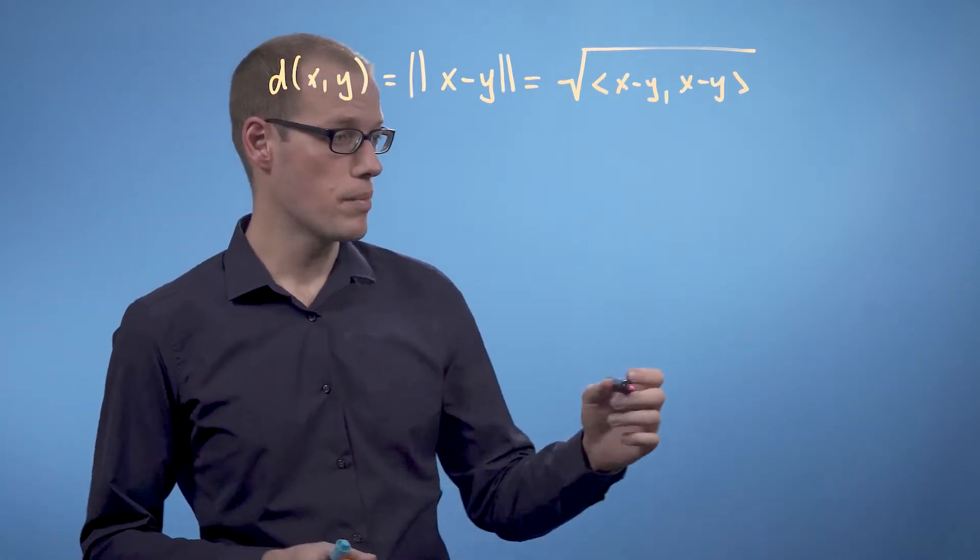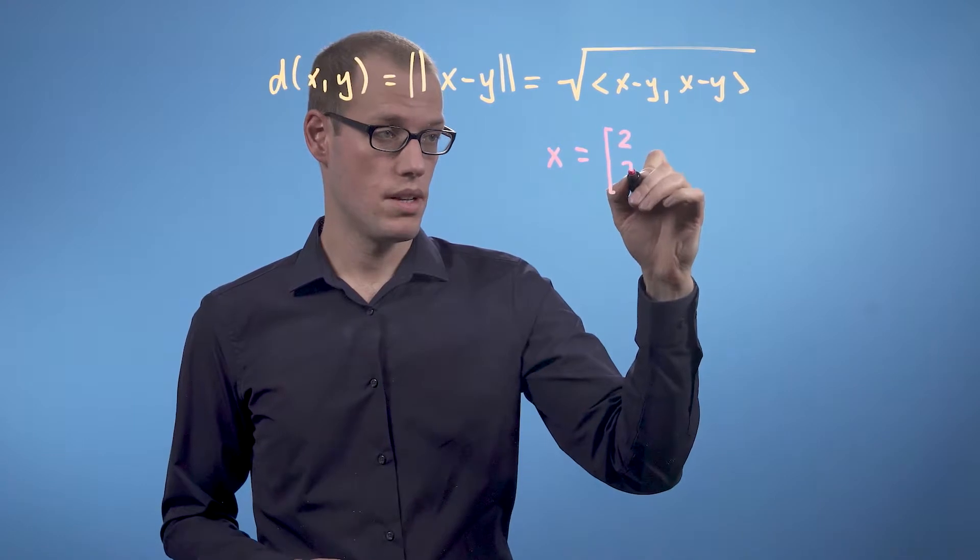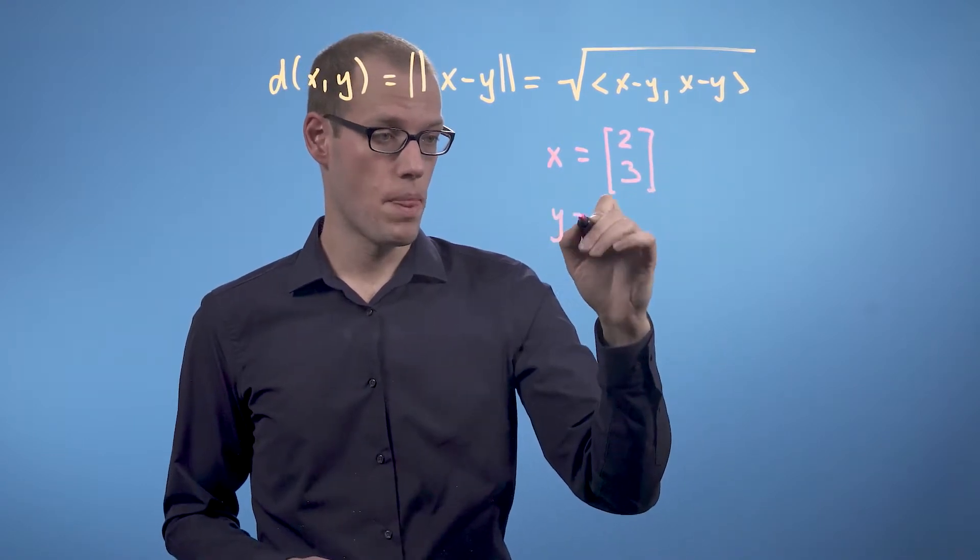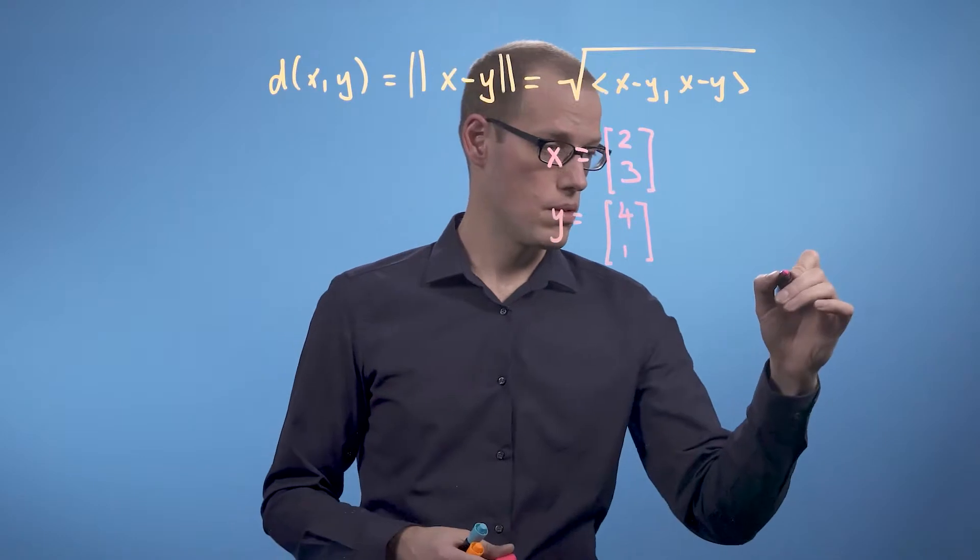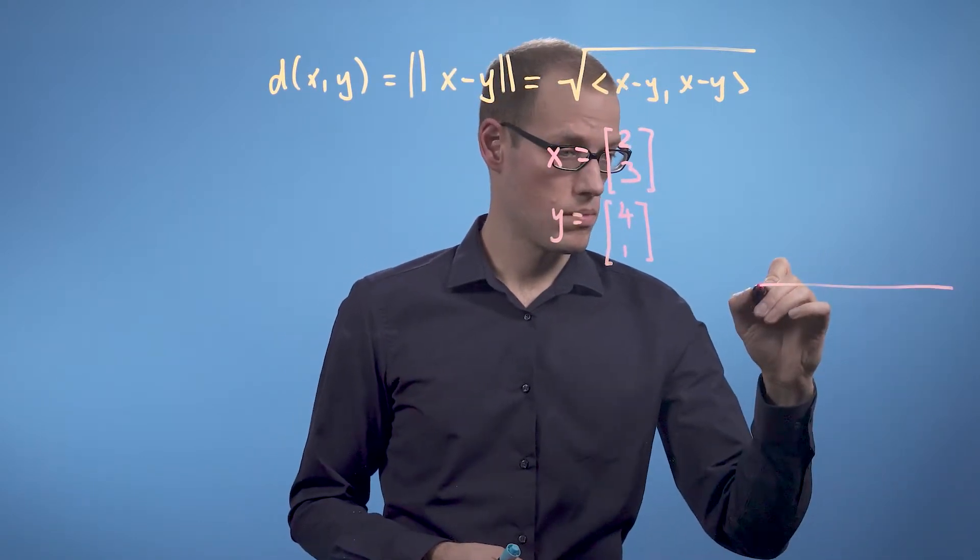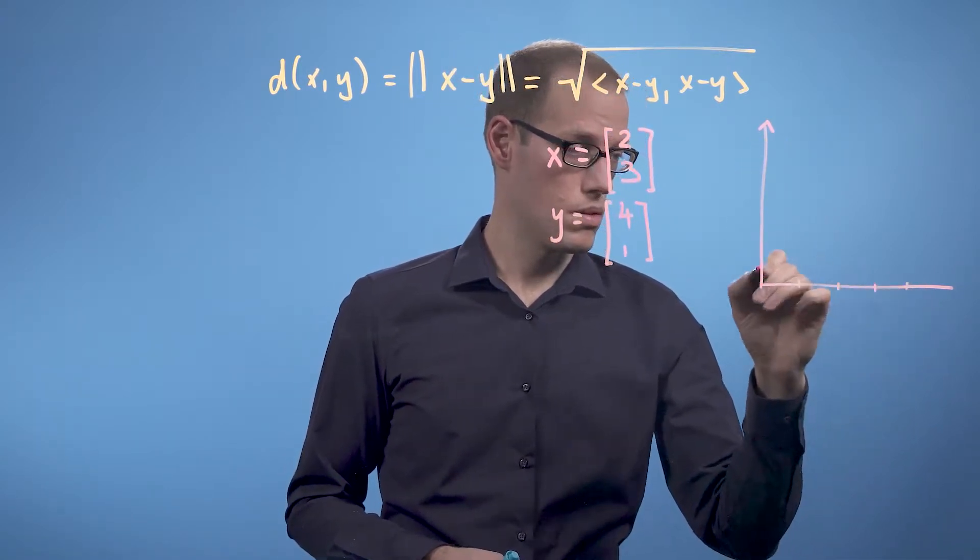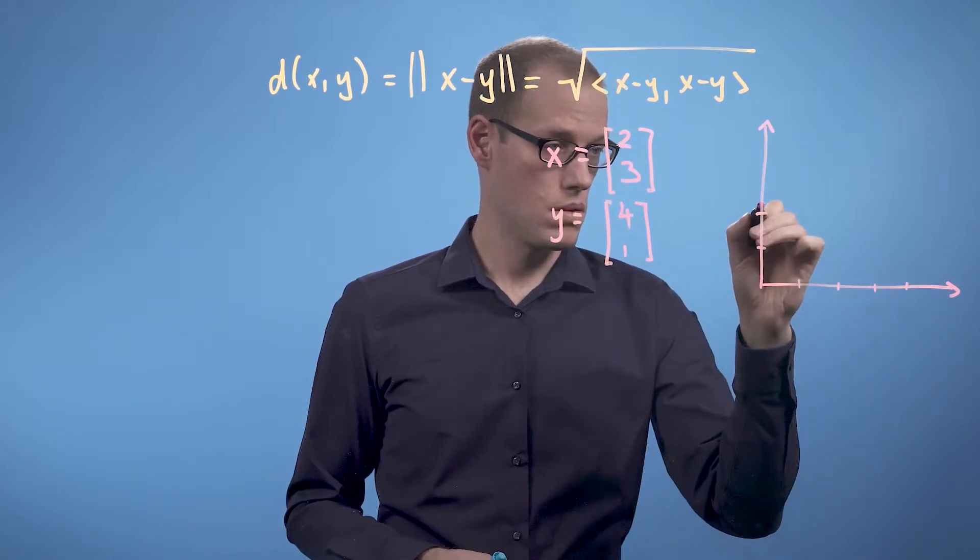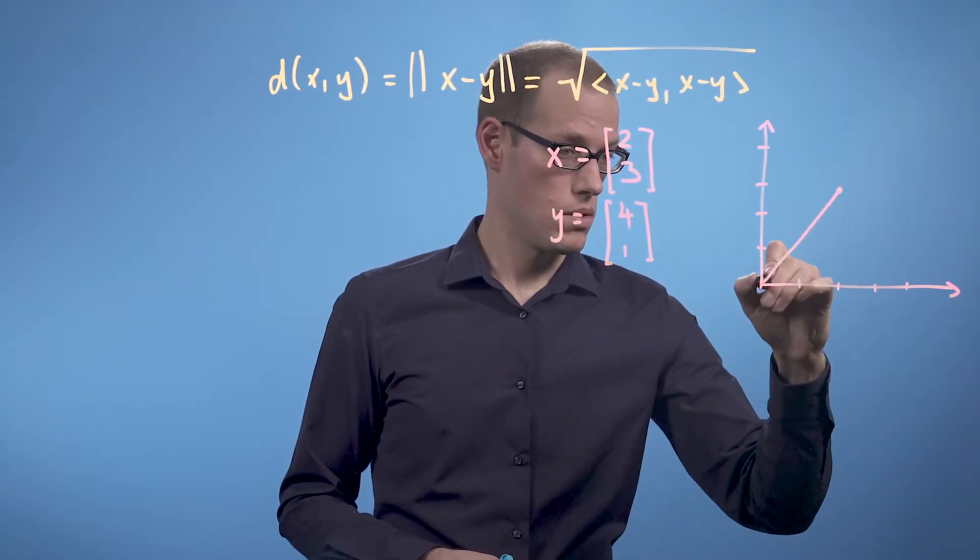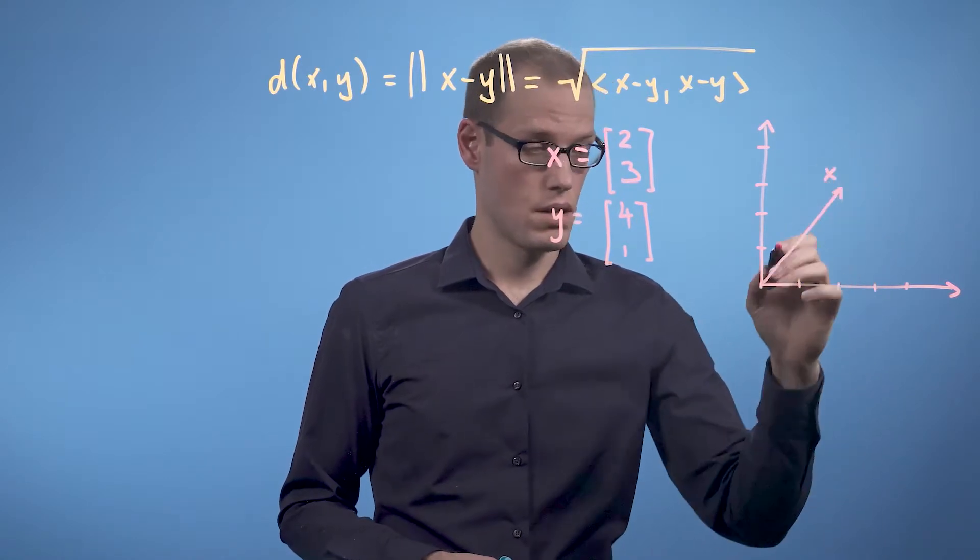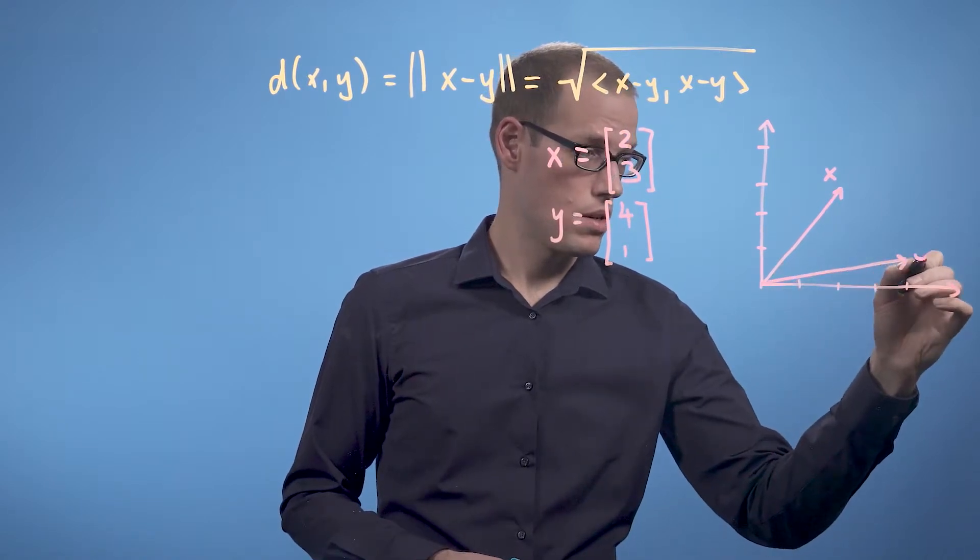We're going to look at two vectors, x and y. We'll say x is [2, 3] and y is [4, 1]. So let's draw this. This is x and y is over here.